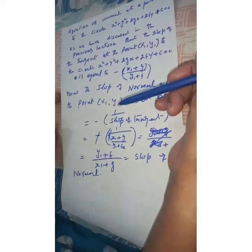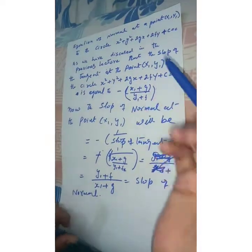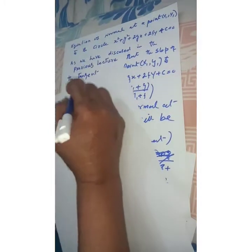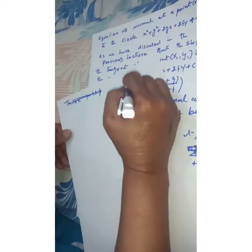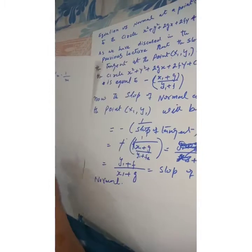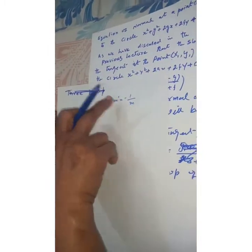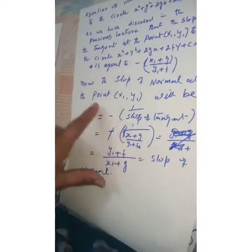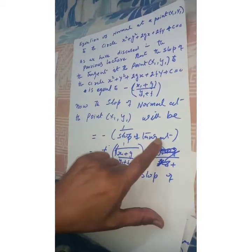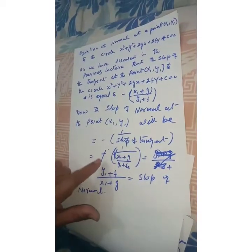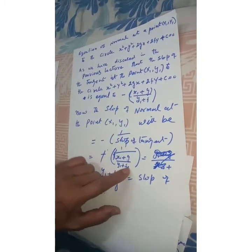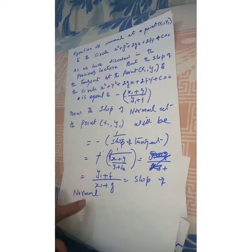Now we need to find the slope of normal. The tangent and normal are perpendicular to each other. So the slope of normal is equal to minus 1 over slope of tangent, which gives us minus 1 over [-(x1+g)/(y1+f)], that is (y1+f) dividing by (x1+g). This is our slope of normal.